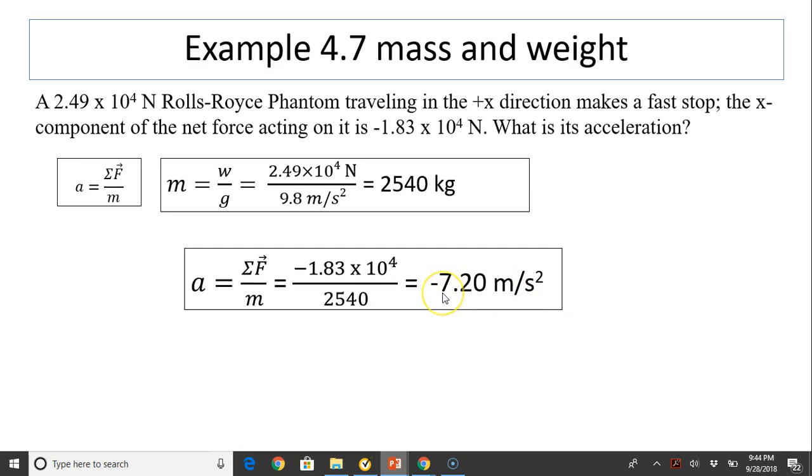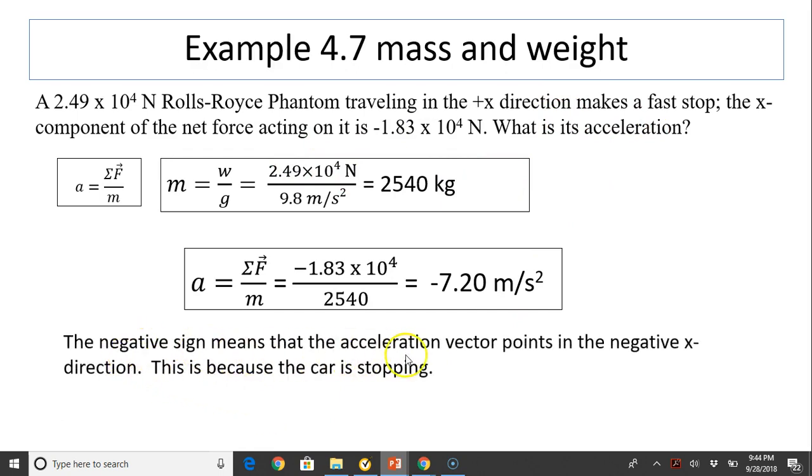This negative value actually makes sense because the car is coming to a fast stop. So you must have a force that's resisting the velocity. The negative sign means acceleration points in a negative direction. This is because the car is stopping.